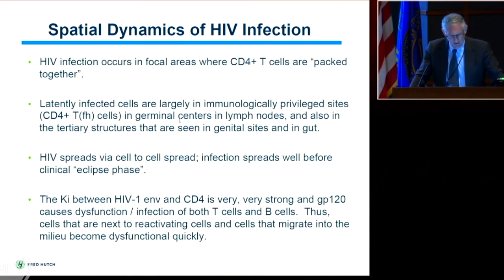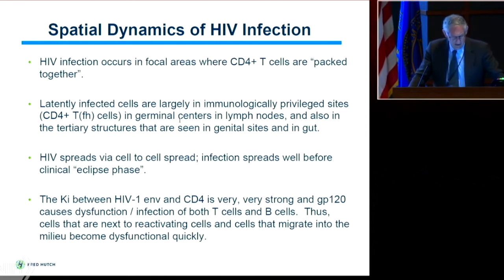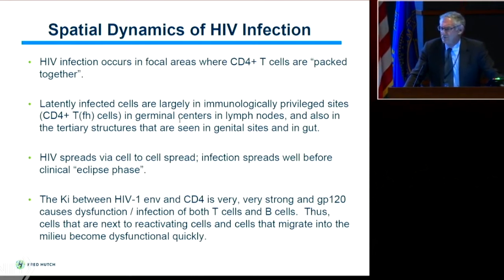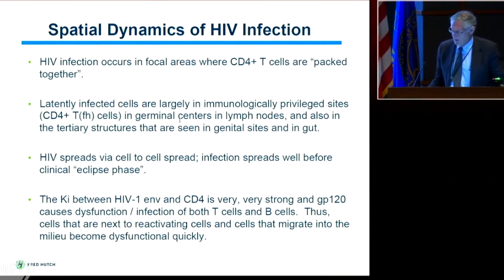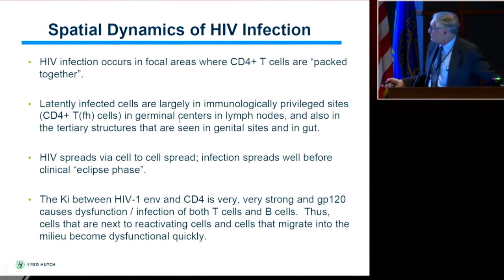HIV spreads by cell-to-cell infection and infection spreads well before the clinical eclipse phase. The KI between the envelope and CD4 is very strong. As Tony showed 25 years ago, as soon as GP120 gets onto the membrane of a CD4 T-cell, it causes dysfunction as well as a B-cell. One of the fundamental issues here is not just killing of HIV-infected CD4 cells, it's their dysfunction — changing them from functional help to IL-10 and other signaling issues. In this milieu of reactivation, dysfunction comes quickly and is profound.